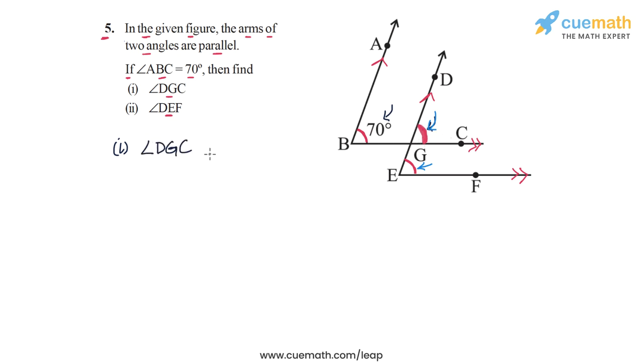Angle DGC will be equal to angle ABC. And the reason is that these two angles form a pair of corresponding angles for the parallels BA and ED. So the parallels are BA and ED. And this means that angle DGC will also measure equal to angle ABC or 70 degrees.